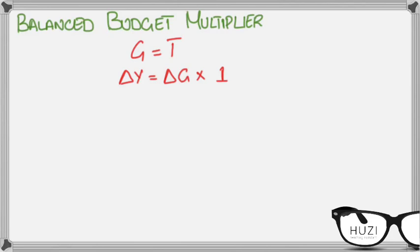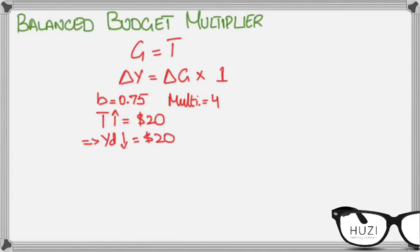So let's do an example. Suppose B is 0.75 and let's say the multiplier is 4. Now, let's say a rise in net taxes is of $20. So if net taxes rose by $20, this implies that your disposable income has fallen by $20.